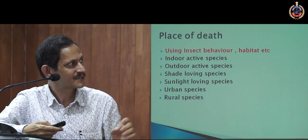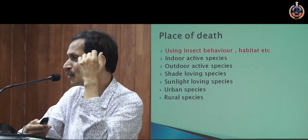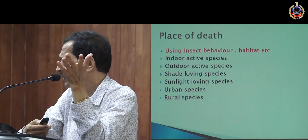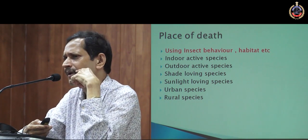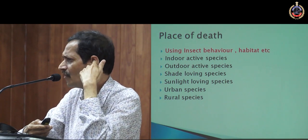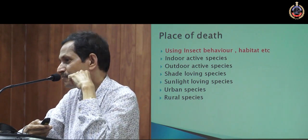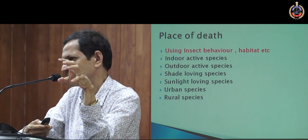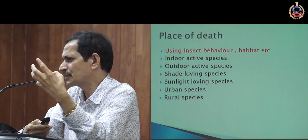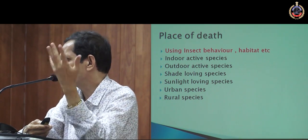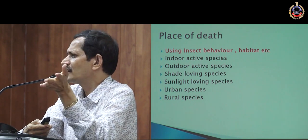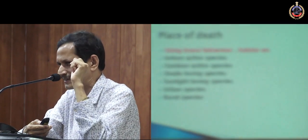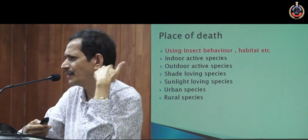There was a very interesting case history from the US. The body was found in a city — I think it was in New York, on the roadside. When the entomological investigation was done, all the species belonged to rural areas. Some insects are specific to rural areas and you won't see them in urban areas. If you find species which are specifically rural, that means the actual murder was committed in a rural area and the body was brought to the city. That kind of clue you can draw from entomological evidences.